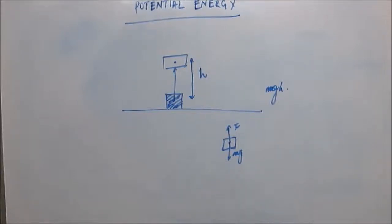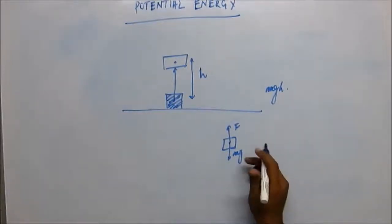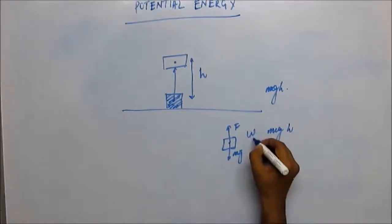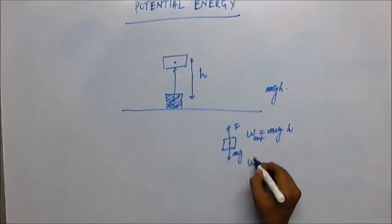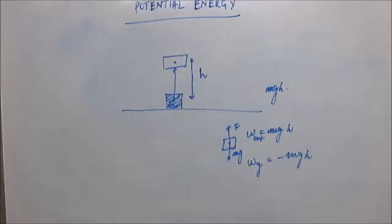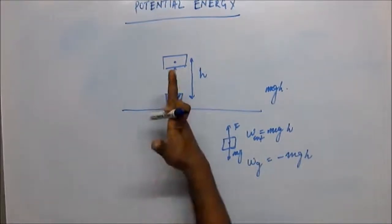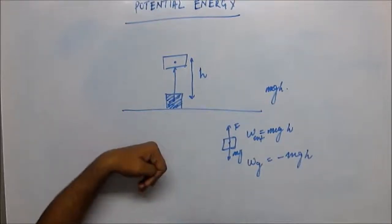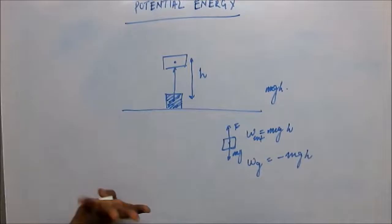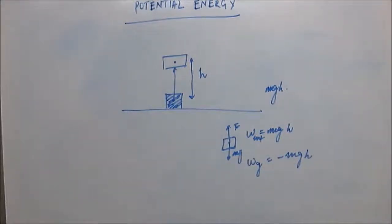The body doesn't gain any velocity and hence kinetic energy, so the external force at all times should be equal to mg. Work done by the external force will be mg times h. Work done by gravity will be equal to minus mg times h — we understand this well because the gravity force is downward and displacement is upward. So this has to be negative work because they are opposite in direction.